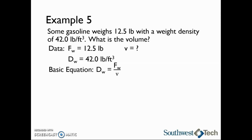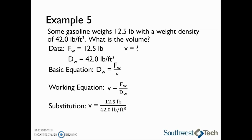The basic equation for weight density is that d sub w equals the weight force divided by the volume. We will rearrange this by multiplying both sides by v and dividing both sides by d sub w, giving us v equals the weight force divided by the weight density. Substituting in our data: volume equals 12.5 pounds divided by 42.0 pounds per cubic foot, which gives us a volume of 0.298 cubic feet. This concludes our discussion on mass density and weight density.